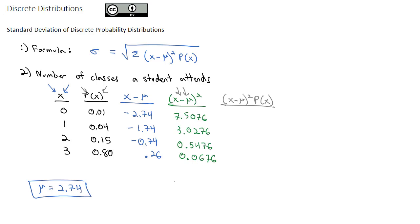So skipping over the middle blue column here, I'm doing 0.01 times 0.7506, and I get 0.0751. Then I do 0.04 times 3.0276, which is 0.1211.